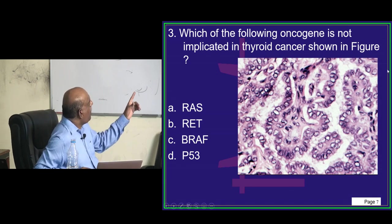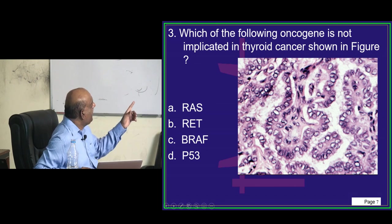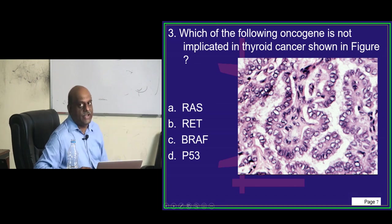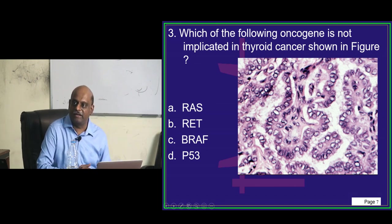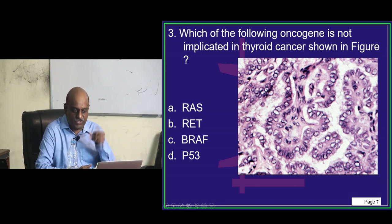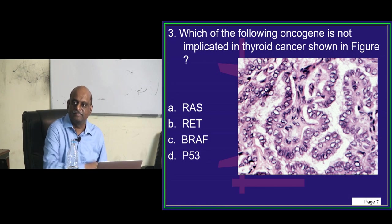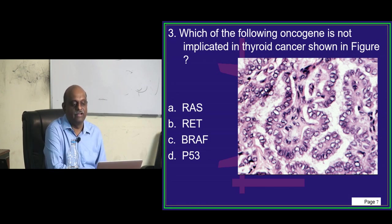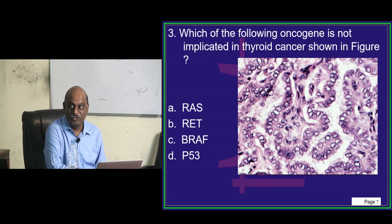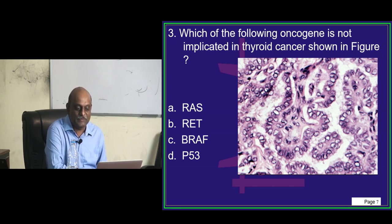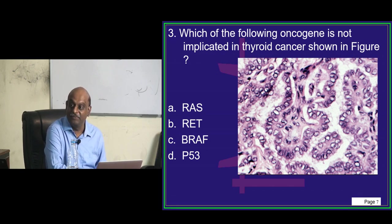Which is the oncogene not implicated in this thyroid cancer? First, identify the histology of the thyroid cancer shown, and beyond just knowing that, you should also know which enzymes and oncogenes are involved. Please shoot your answer.